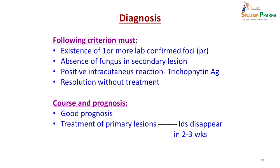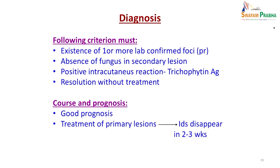For diagnosis the following criteria must be followed: existence of one or more lab-confirmed primary foci; absence of fungus from the secondary lesion — microscopically or by culture you cannot demonstrate any fungus from the vesicle; and if you do an intracutaneous reaction using the incriminating fungus it will be positive. Most often these vesicles resolve without treatment, which is another way to confirm the diagnosis. Course and prognosis is usually good, and treatment of the primary lesion leads to disappearance of the vesicles. No specific treatment is needed for the vesicles themselves.